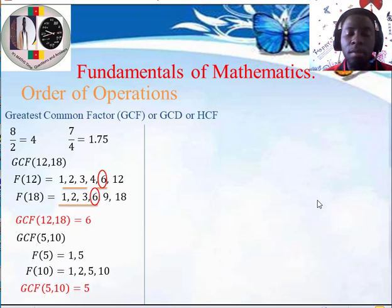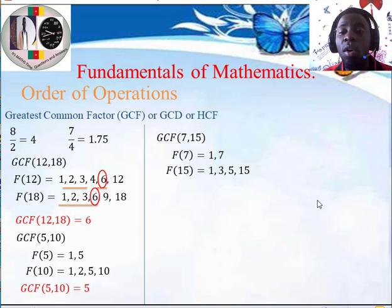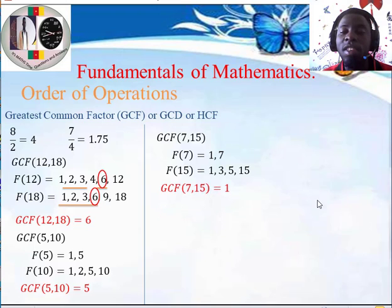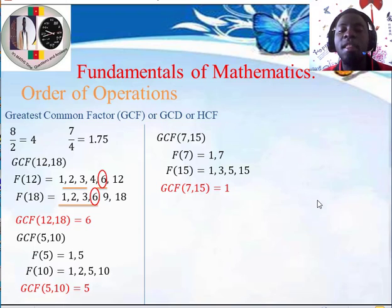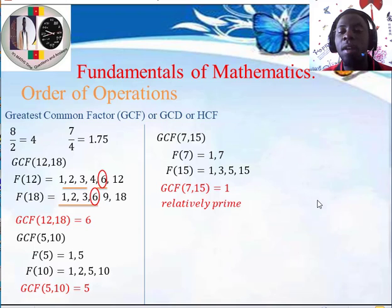Now let's look at the greatest common factor between 7 and 15. We list the factors of 7, which are 1 and 7, and the factors of 15, which are 1, 3, 5, and 15. The only common factor is 1. Therefore, the greatest common factor between 7 and 15 is 1. When two numbers have a GCF of 1, meaning they are only related by the factor 1, we call these two numbers relatively prime numbers.